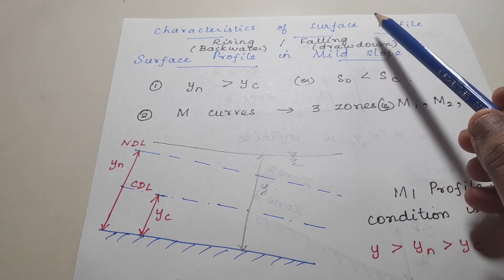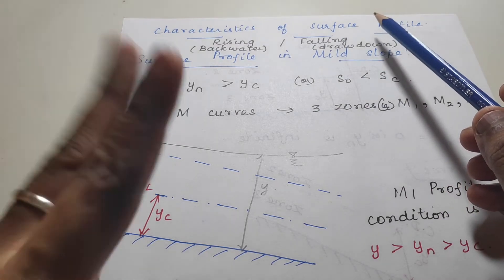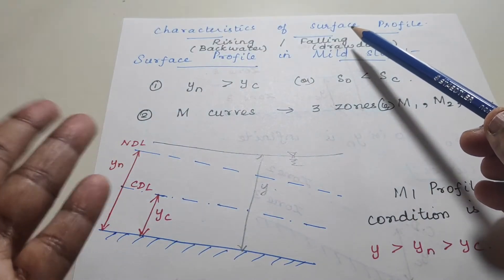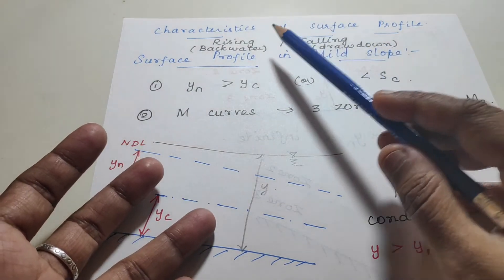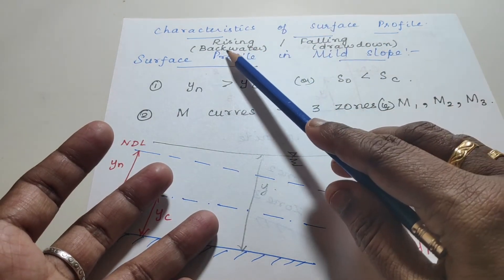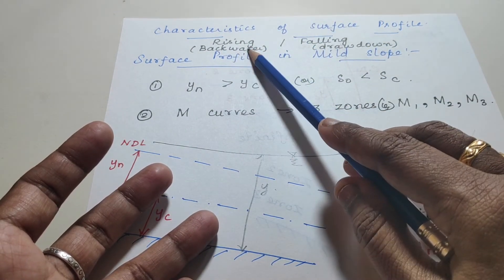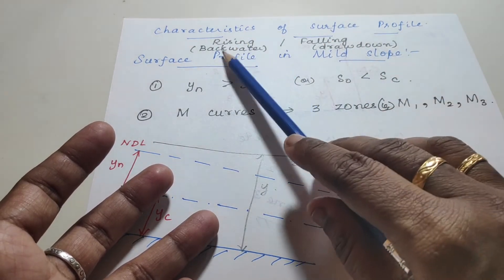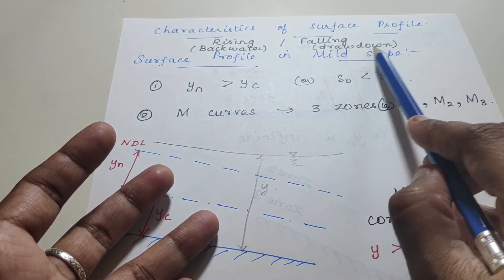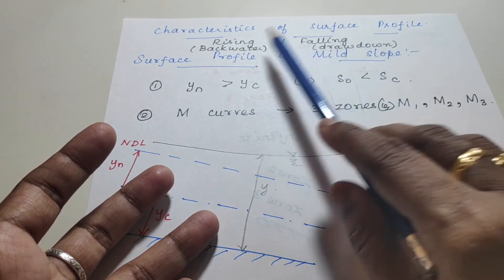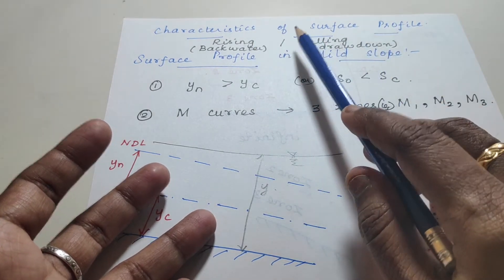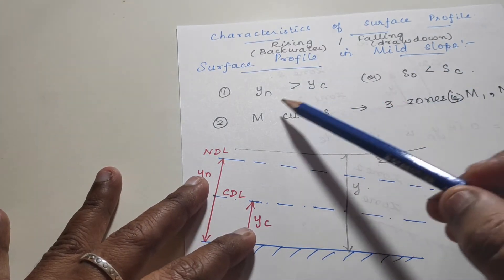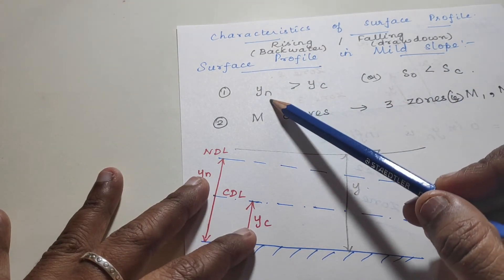There are two surface profiles: the water will be either rising or falling. A rising profile is otherwise known as a backwater curve, and a falling profile is known as a drawdown curve. These are the two fundamental surface profile types in open channel flow.